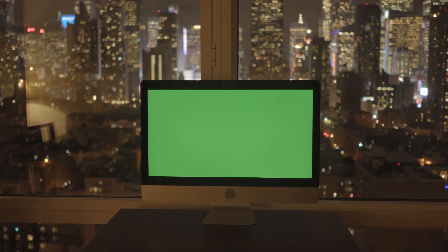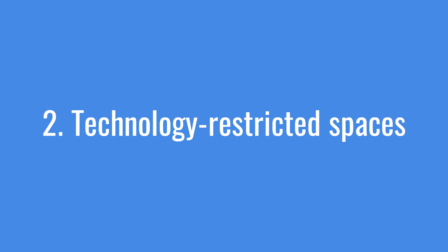Number two: technology-restricted spaces. We can create some technology-free zones. For example, at home, the dining area and bedrooms — we can avoid or limit use of any digital device in those spaces.